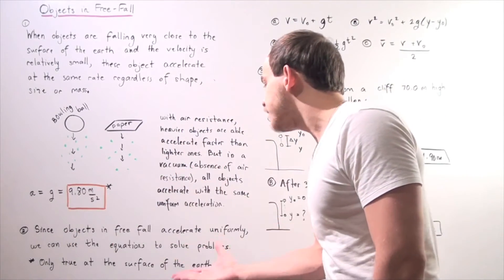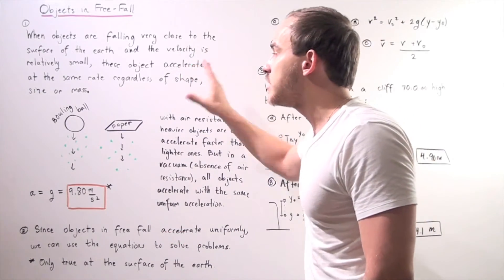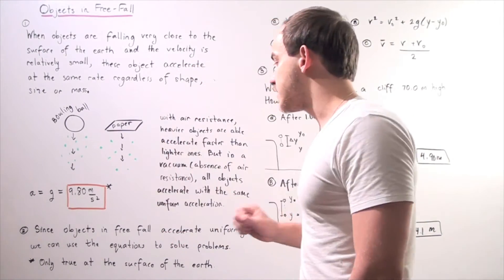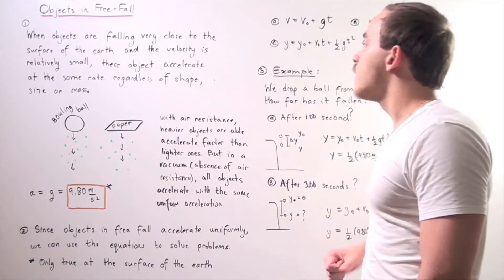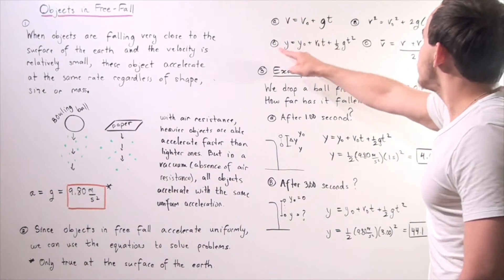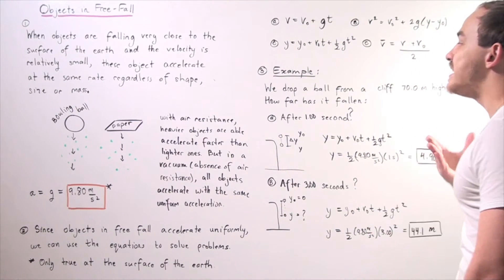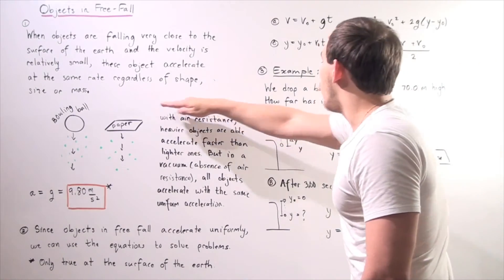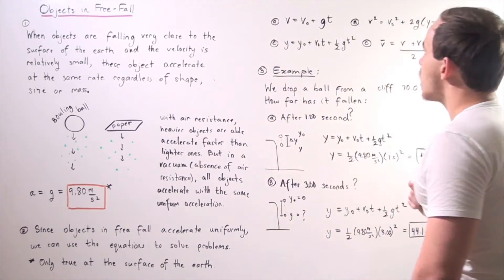Since objects in free fall accelerate uniformly because we make the assumption that there is no air resistance, we can use the equations to solve different problems. These are the four equations on uniform acceleration except now we're not working along the x-axis, we're working along the y-axis.